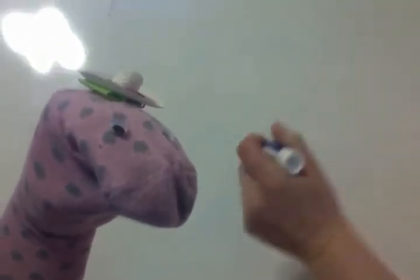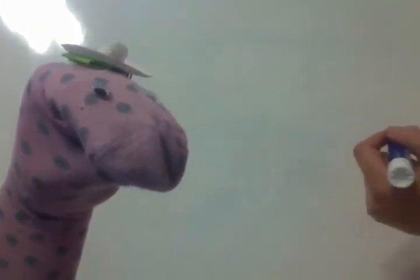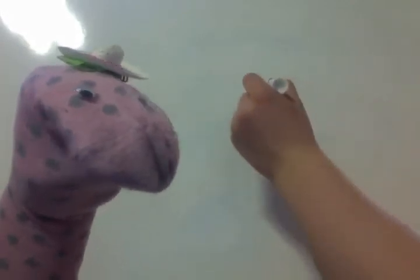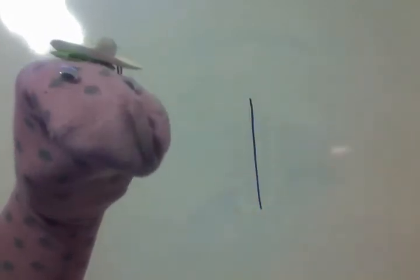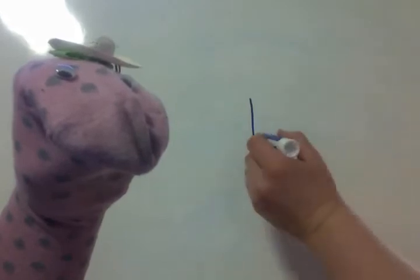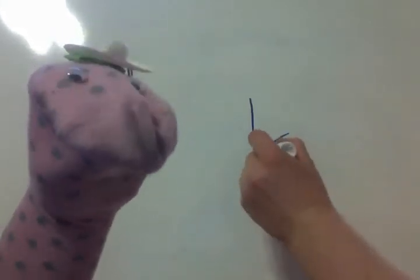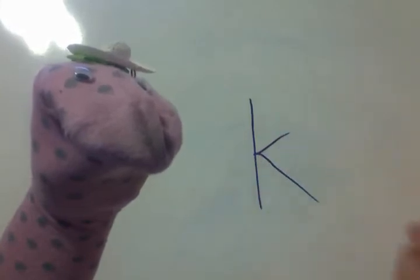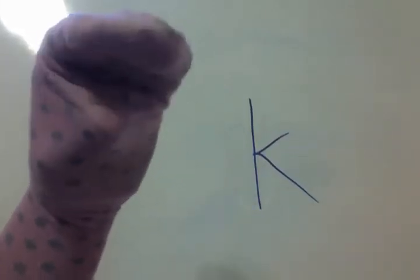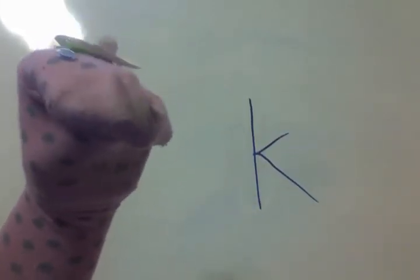I'm gonna draw for you the letter K. So first, if you remember from when we do our letter karate, we go hi-ya all the way down, and then the K kicks up a little bit and then it kicks down. There we go — the letter K.